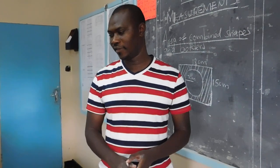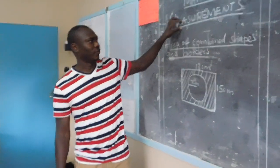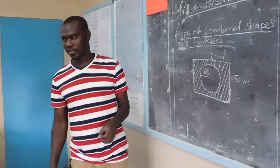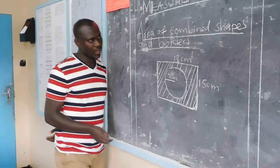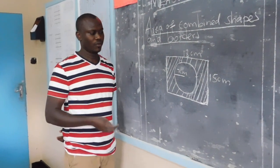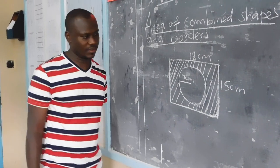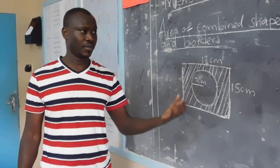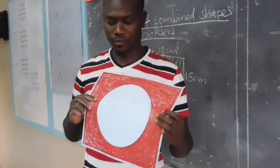Good afternoon learners, welcome to our class. Today we are still on measurement and we want to learn about the area of combined shapes and borders. I have three examples here. In most cases students find this difficult but it's not — it's as simple as this paper I have with me.